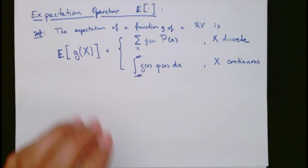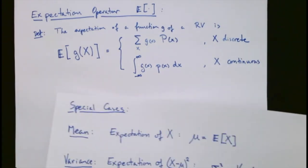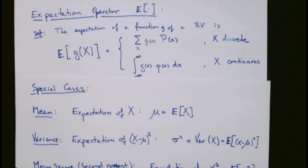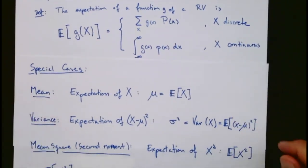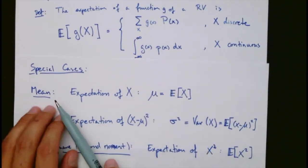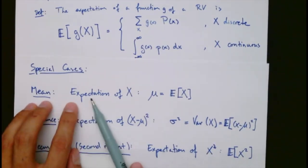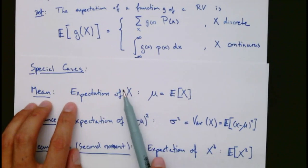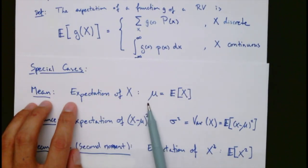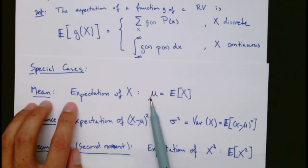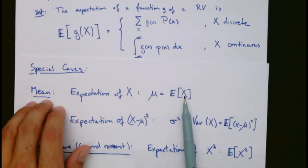Many special choices for g can be made, and there are a few special cases which are very important. The first special case is called the mean — that is the expectation of x, where the function g is simply g(x) = x. It is so important that we often denote it by μ, so μ = E[x]. That is the mean of x.